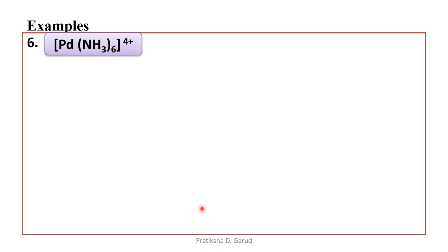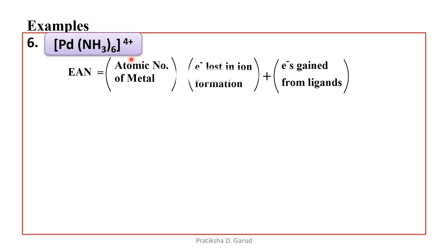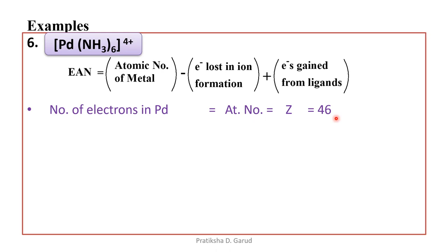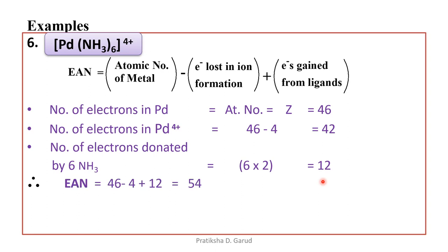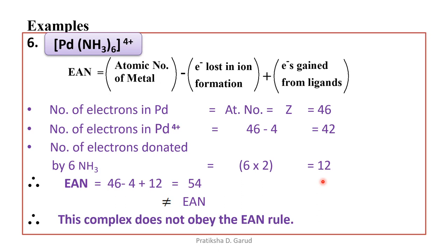Sixth example: [Pd(NH₃)₆]⁴⁺. NH₃ is a neutral ligand, therefore palladium will have a +4 charge. EAN = atomic number of metal − electrons lost in ion formation + electrons gained from ligands. Number of electrons in palladium, atomic number Z = 46. Number of electrons in Pd⁴⁺ = 46 − 4 = 42. Number of electrons donated by 6 NH₃: for each NH₃ we count 2, so 6 × 2 = 12. Therefore, EAN = 46 − 4 + 12 = 54. This complex does not obey the EAN rule.